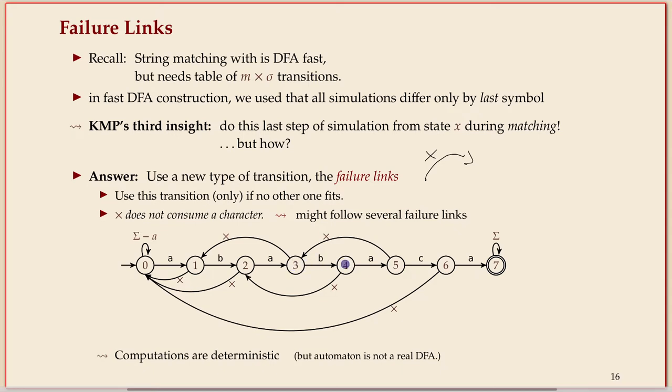And that could mean it still doesn't work because you only have an edge for B. So you have to take another failure link and maybe another failure link. And only at this point, you can consume the C because this loop edge allows a C.